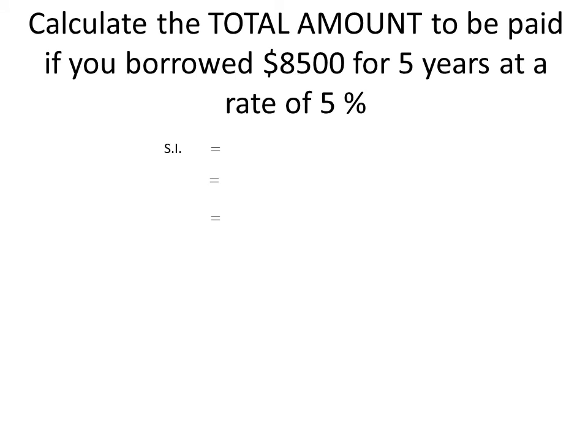Let's do one last example. Calculate the total amount to be paid if you borrow eight thousand five hundred dollars for five years at a rate of five percent. Not only are we calculating the simple interest, but we need to find how much you'll pay back in total. Remember, when you borrow, you have to give it back plus interest. Let's first calculate the interest using P times R times T. We locate the principal and multiply — the answer is 2,125. But is this the total amount you're going to pay? No.